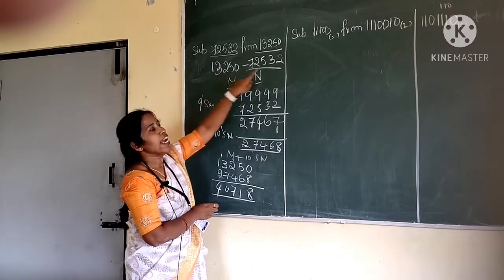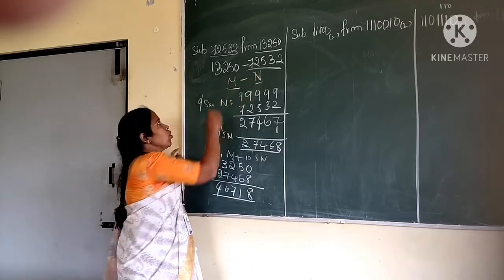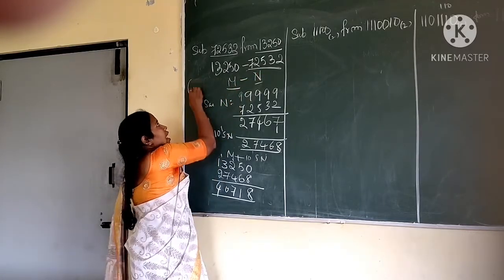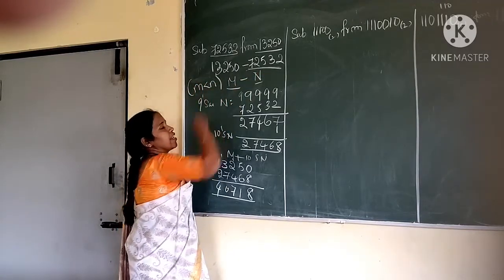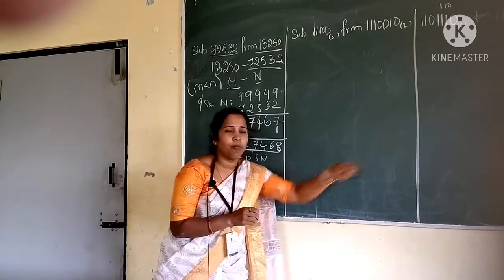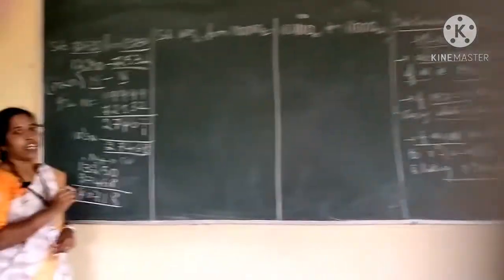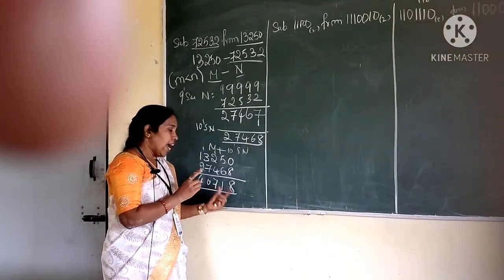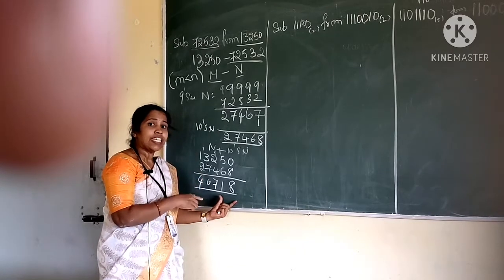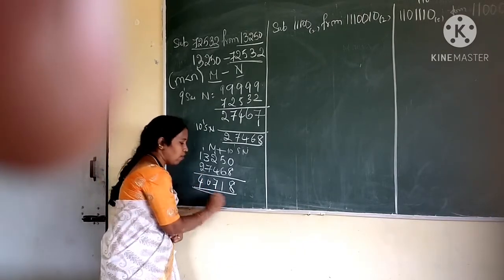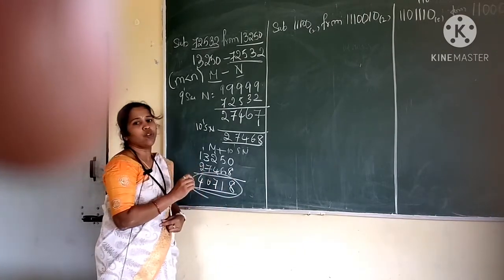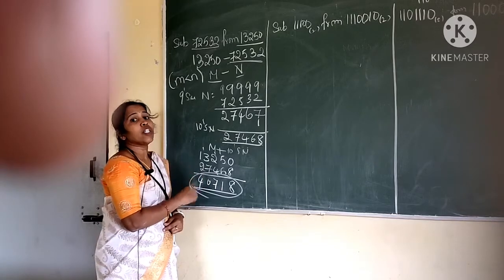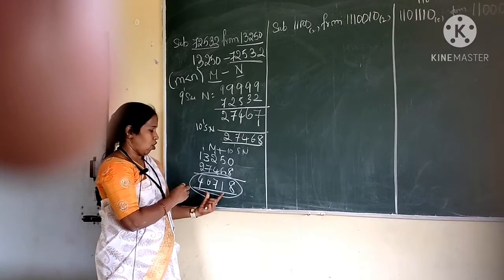M value is 13,000 and n value is 72,000. So m is less than n. Then in that case — that is the third point — the result should be given with a negative sign. And you have to find out once again the r's complement of the result. Whatever result you got, for that you have to find out the r's complement.